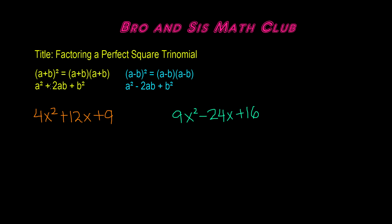So here we have (a + b)², which is the same as (a + b) times (a + b), which gives us a² plus 2ab plus b². And on the other hand, we have (a − b)². So when we multiply (a − b) by itself, we get a² minus 2ab plus b².